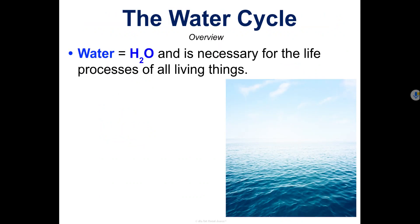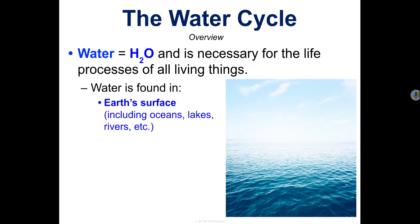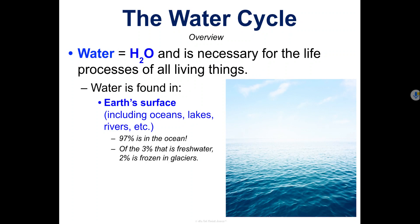Let's talk about water. Water is H2O — that's two hydrogens and one oxygen — and water is necessary for the life processes of all living things. Water is found in several places. One is Earth's surface, which includes oceans, lakes, rivers, and so on. 97% of the water on Earth's surface is in the ocean, 3% is freshwater, and 2% is frozen in glaciers.